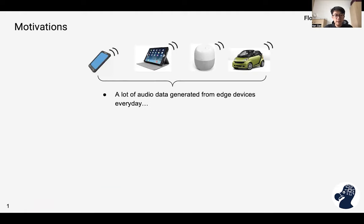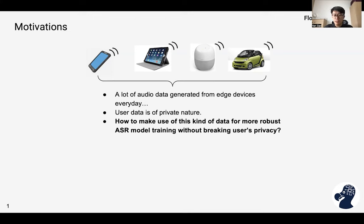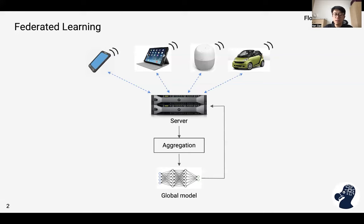Deep neural networks achieve state-of-the-art performance for automatic speech recognition (ASR), mainly due to large-scale datasets. Recently, with the development of mobile devices, a lot of audio data is generated every day from devices such as mobile phones, tablets, personal assistants, and smart cars. This user data is usually private in nature, so how to make use of this data for more robust ASR model training without breaking user privacy is a key question. Federated learning (FL) is a potential solution.